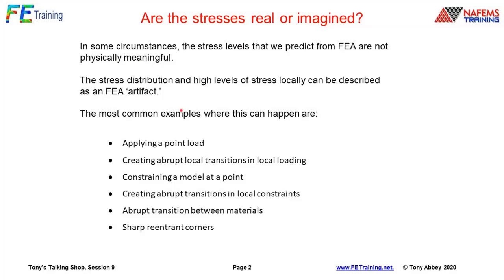Some of the most common examples are: applying a point load generates what's called a singularity, and sharp re-entrant corners — if we don't put a fillet into a CAD model and leave a very sharp corner — also generate a singularity. Others are less obvious: an abrupt transition in local loading, such as applying a pressure distribution in the center of a plate that suddenly stops, produces a milder singularity at that run-out. The same is true with constraints — stopping a constraint abruptly is actually a harsher singularity.